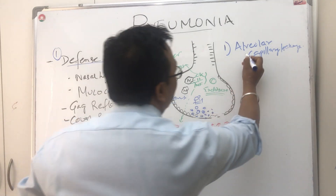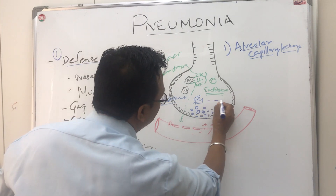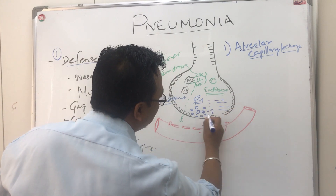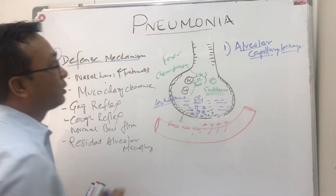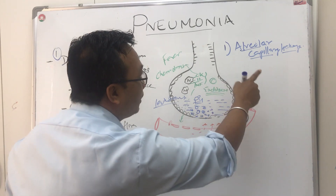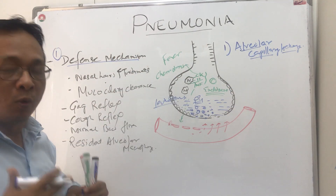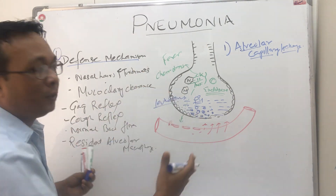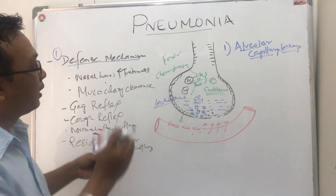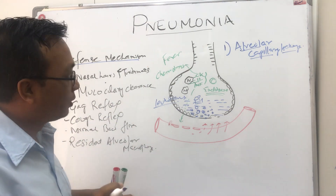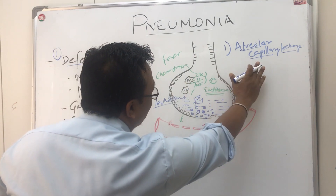Overall what is happening is alveolar capillary leakage, and as a result there is fluid collection. This whole reference goes to Harrison's Internal Medicine and also Robbins' Textbook of Pathophysiology. So alveolar capillary leakage is the first factor to write when you start the pathophysiology in an organized way.